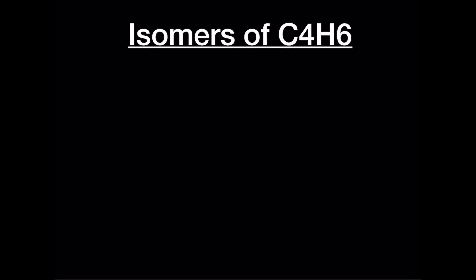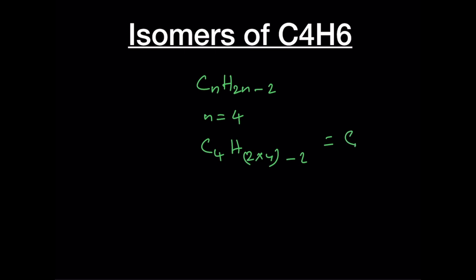In this video we are going to write down the isomers of C4H6. This elemental composition belongs to the general category CnH(2n-2) with n equal to 4, so C4H6 comes from 2 times 4 minus 2, giving C4H6.